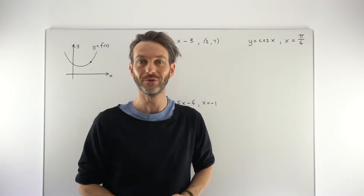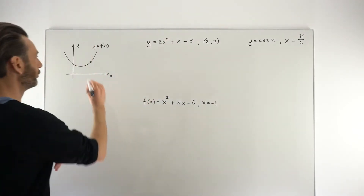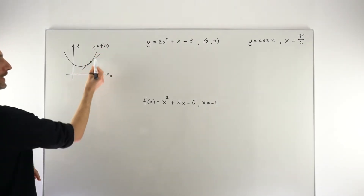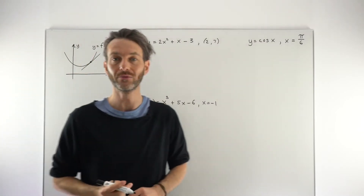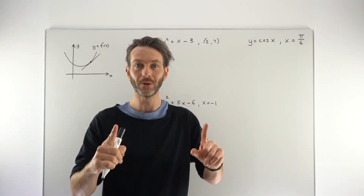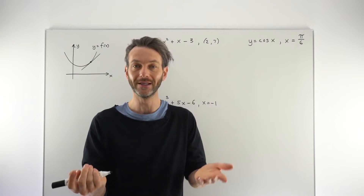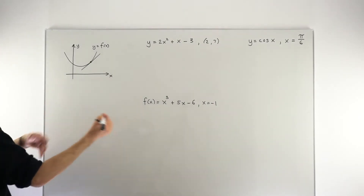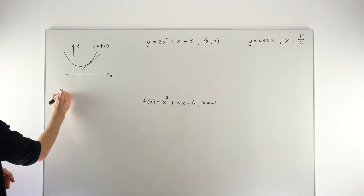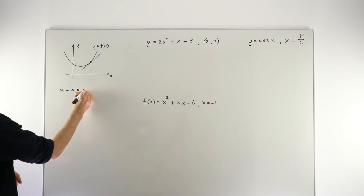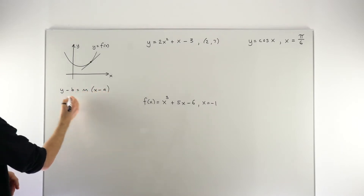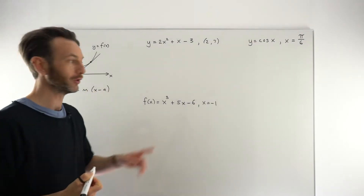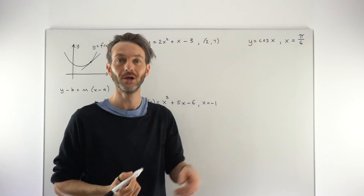Remember, that is the definition of a tangent line — it touches the curve at just one single point. So in this case, our tangent line would be going something like this, and it's the equation of this tangent line that we're trying to find. The first thing about these questions, which is super important, is that a tangent line is a line, and lines are always found using the formula y minus b equals m times x minus a. So this is kind of our starting point.